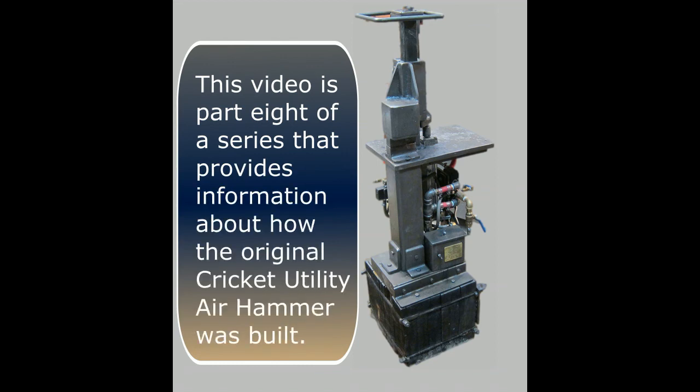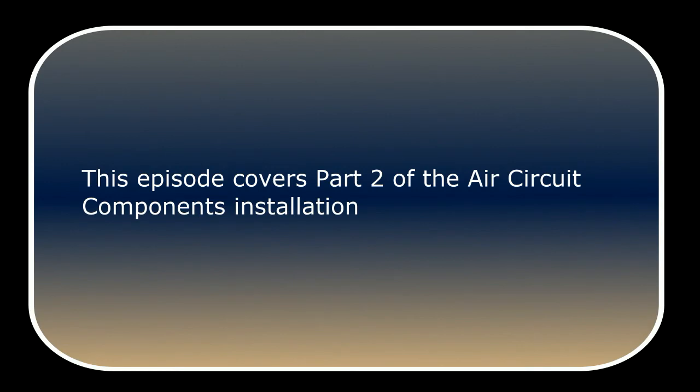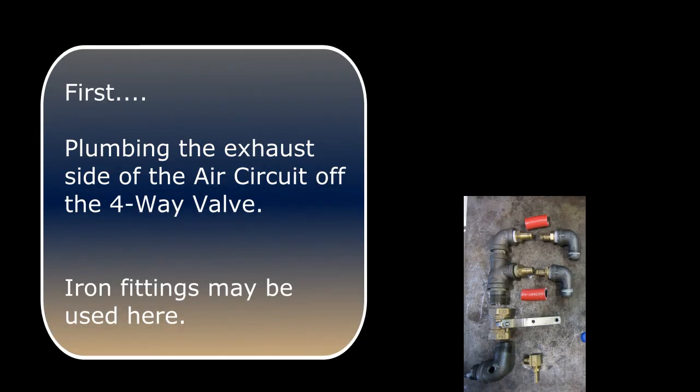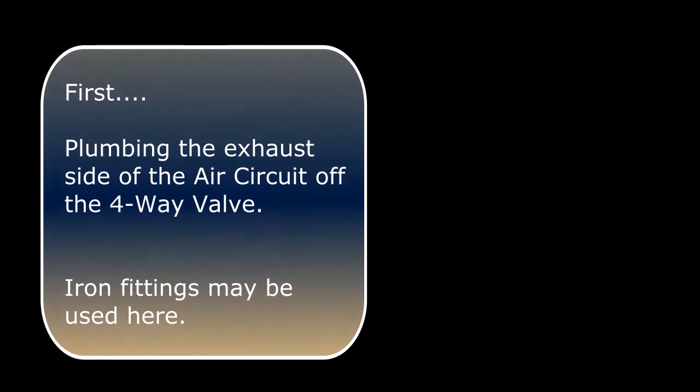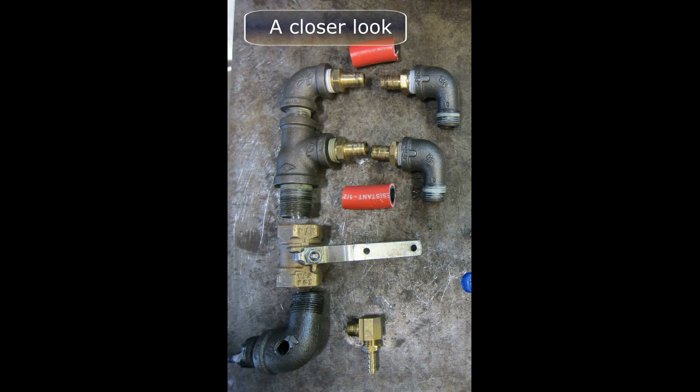This video is part eight of a series that provides information about how the original Cricket Utility Air Hammer is built. This episode covers part two of the air circuit components installation. First, we'll be plumbing the exhaust side of the air circuit off the four-way valve. Iron fittings may be used here. A little closer look at the components that will be installed on the exhaust side.